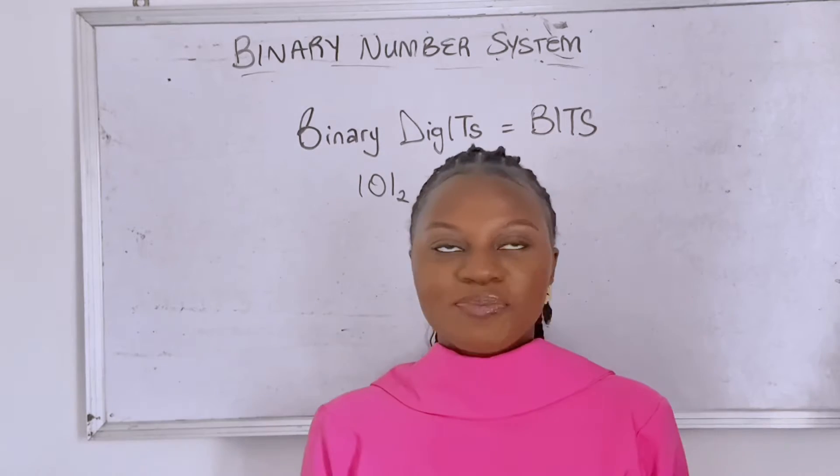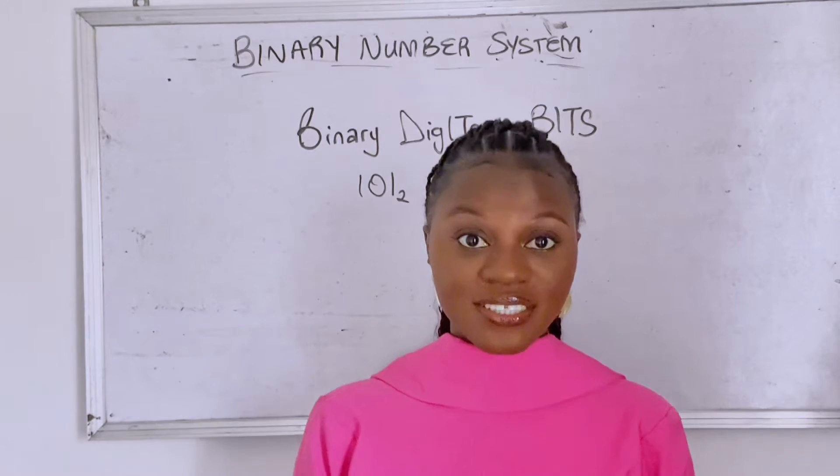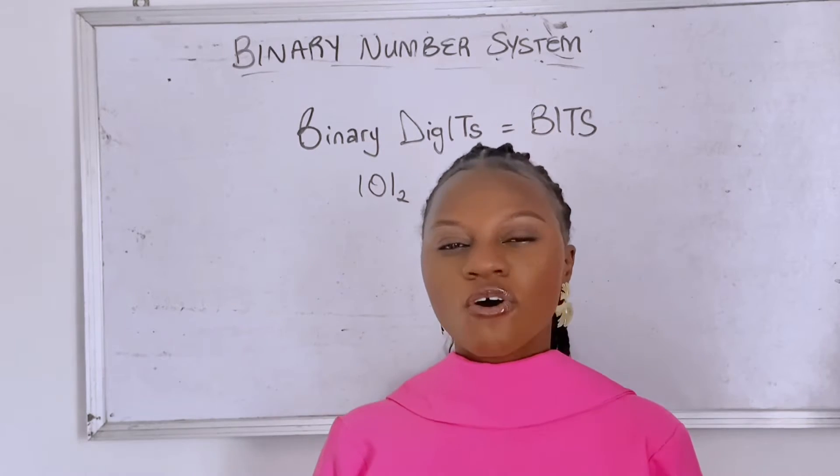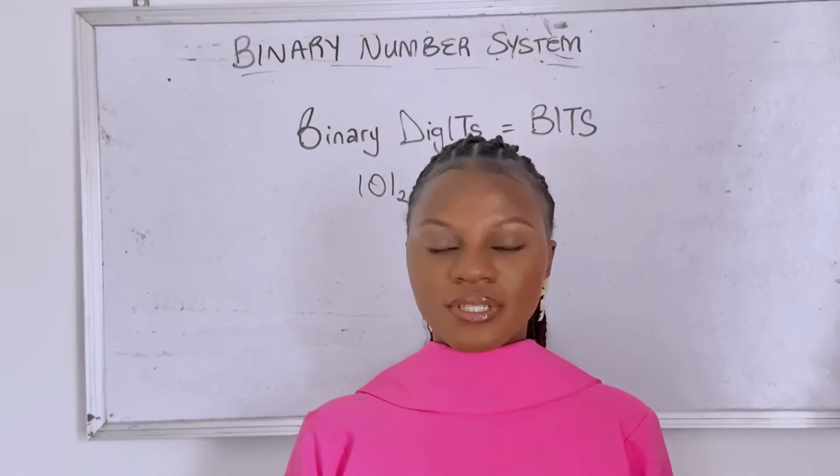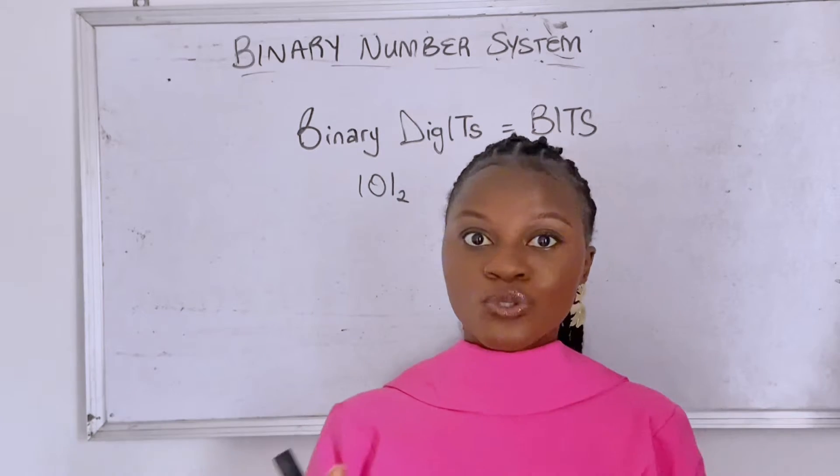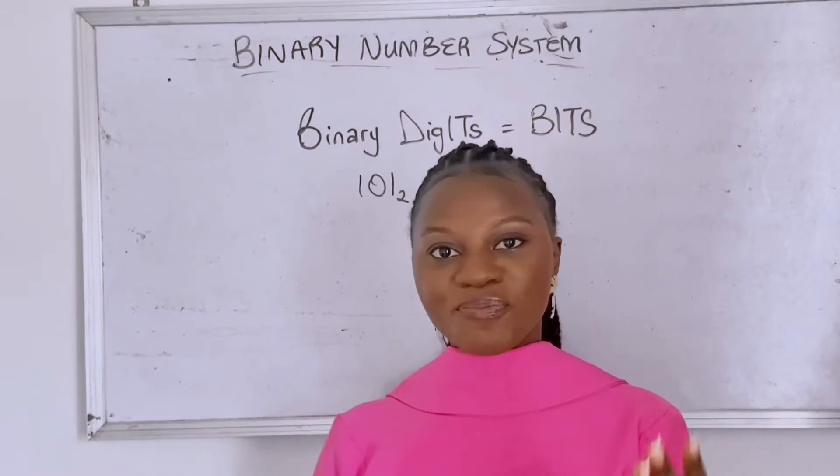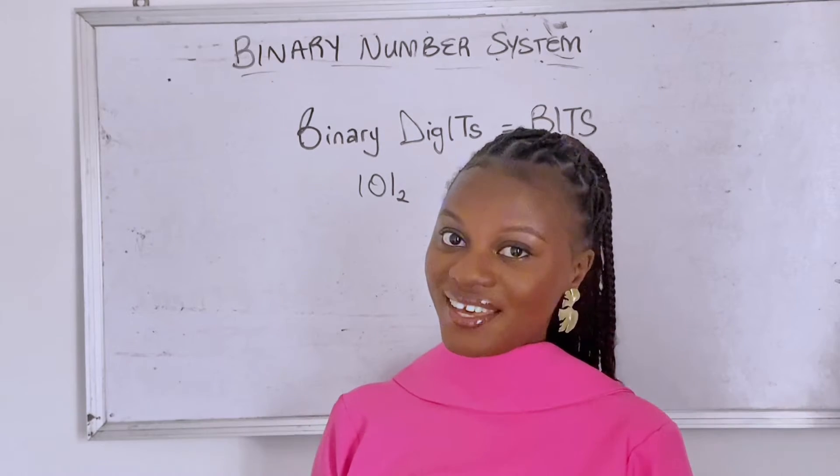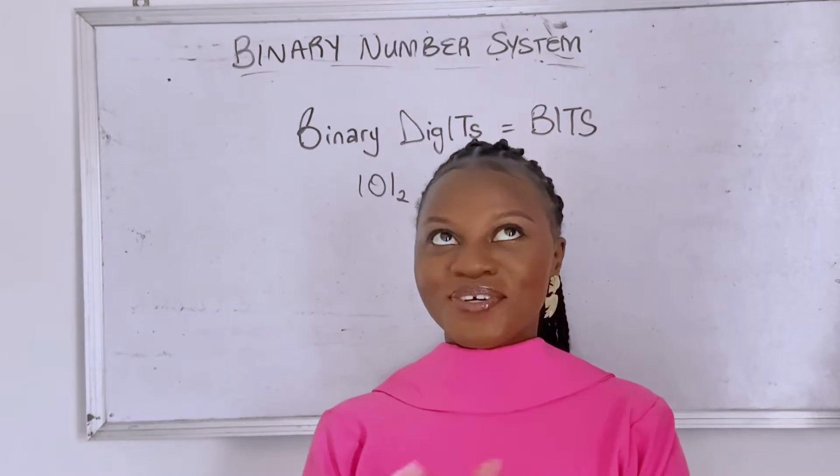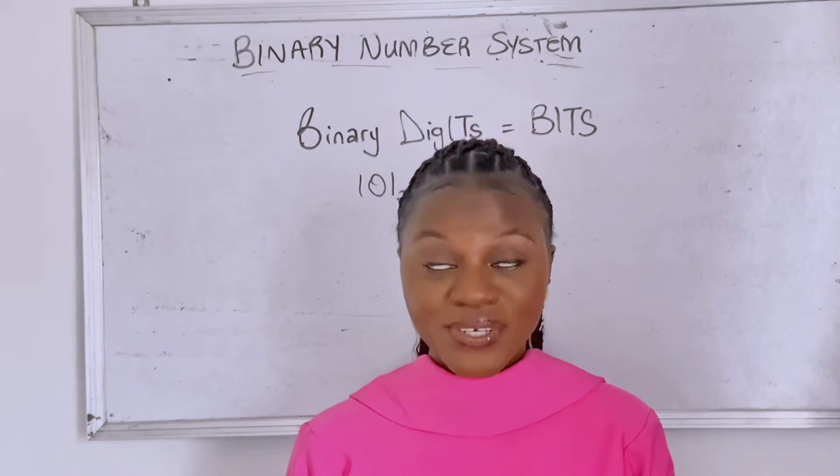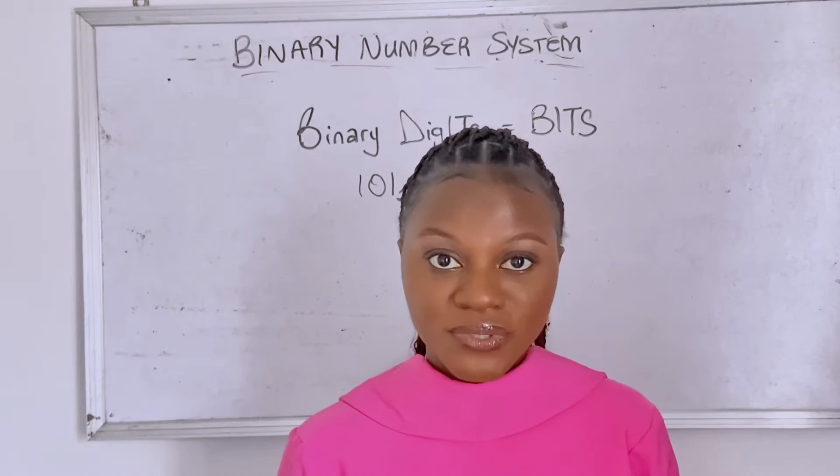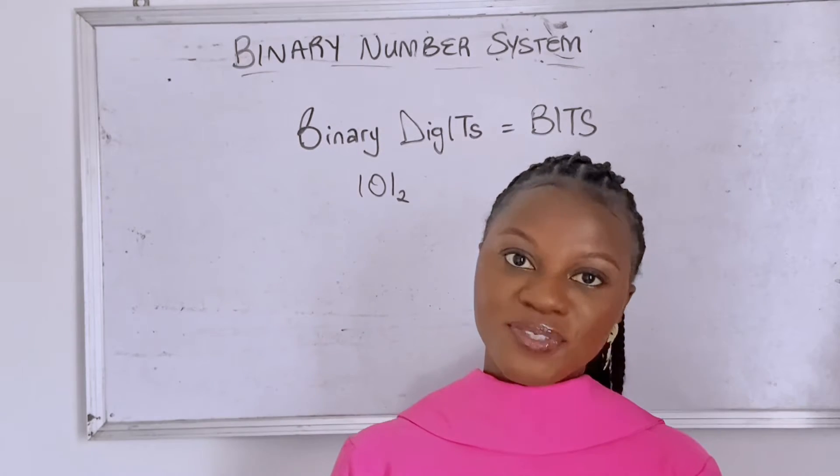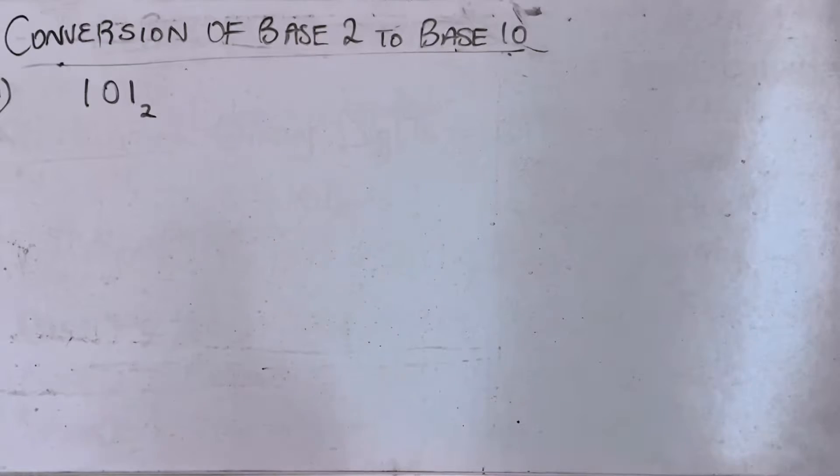All right, now let's move to our favorite part which is solving examples. We're going to learn how to convert binary numbers to decimal numbers, that is converting base 2 to base 10. If you remember from our previous class, we said base 10 are numbers that we use every day. You can decide not to write the base under the base 10 number or just write it if you will.